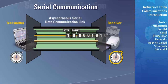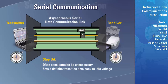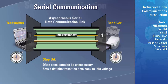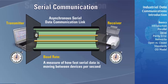After the data bits and parity bit, a stop bit is transmitted. The stop bit is often considered unnecessary because the receiver already knows how many bits are in a character and therefore knows the character is complete. The intent of a stop bit is to set a definite transition time back to the idle voltage so that the link is ready for the next start bit. During this time, the transmitter's output is usually set to the logic 1 state. Baud rate is a measure of how fast serial data is moving between devices per second.